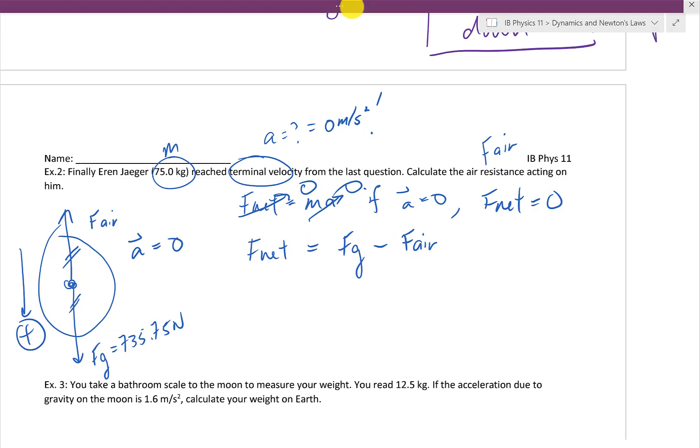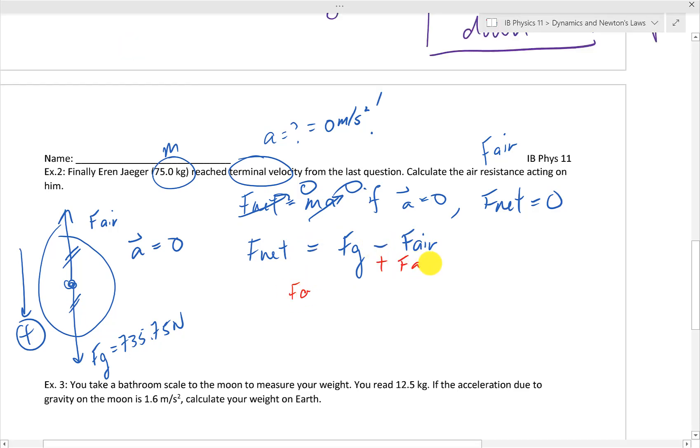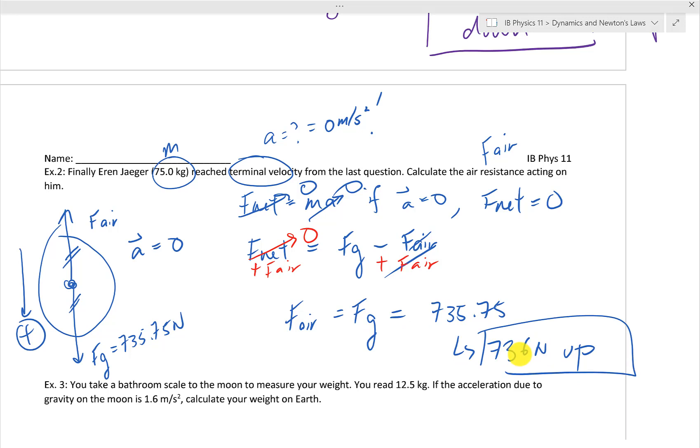That way, when we write Fnet out and solve for the force due to air resistance, we get the force of gravity is going to be equal to air resistance, giving us 736 newtons, but in the upwards direction. So here we have a solution.